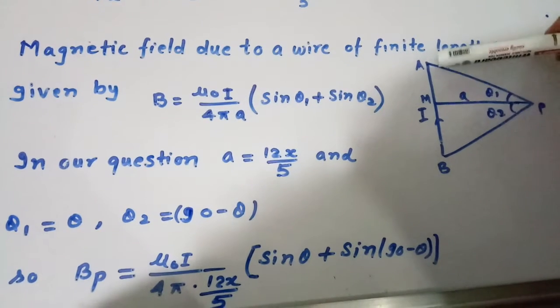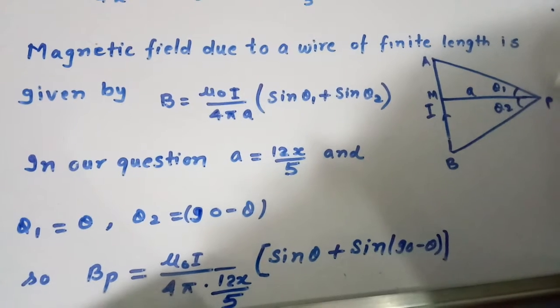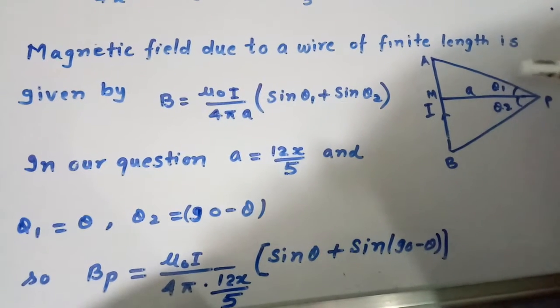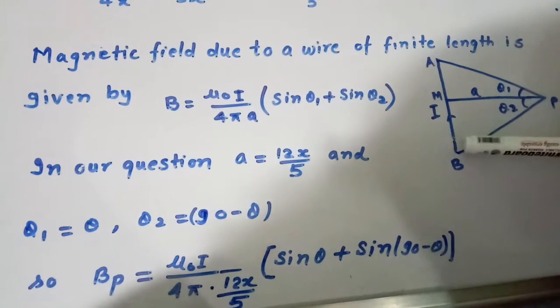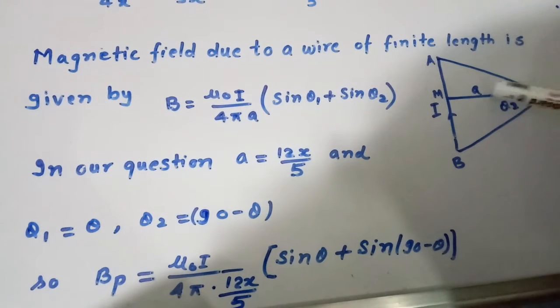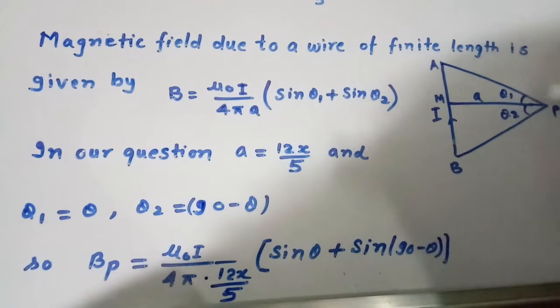This is wire of finite length AB and this is the point where magnetic field is to be found. Suppose the ends of the wire AB make angle θ₁ and θ₂ from point B and this is perpendicular length which is A. So suppose we want to find out magnetic field at point P due to this wire AB.